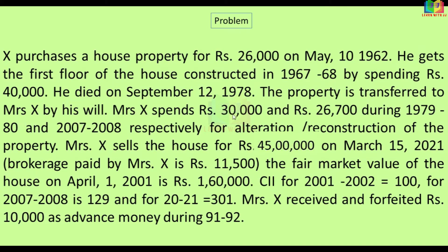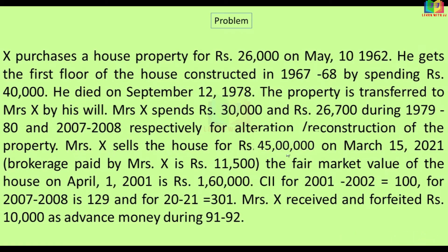Mrs. X spent Rs. 30,000 in 1979-80, which is used for alteration, and Rs. 26,700 in 2007-08, which is used for reconstruction. Mrs. X sold the house for Rs. 45,00,000 on March 15, and brokerage paid was Rs. 11,500. The fair market value is Rs. 1,60,000.